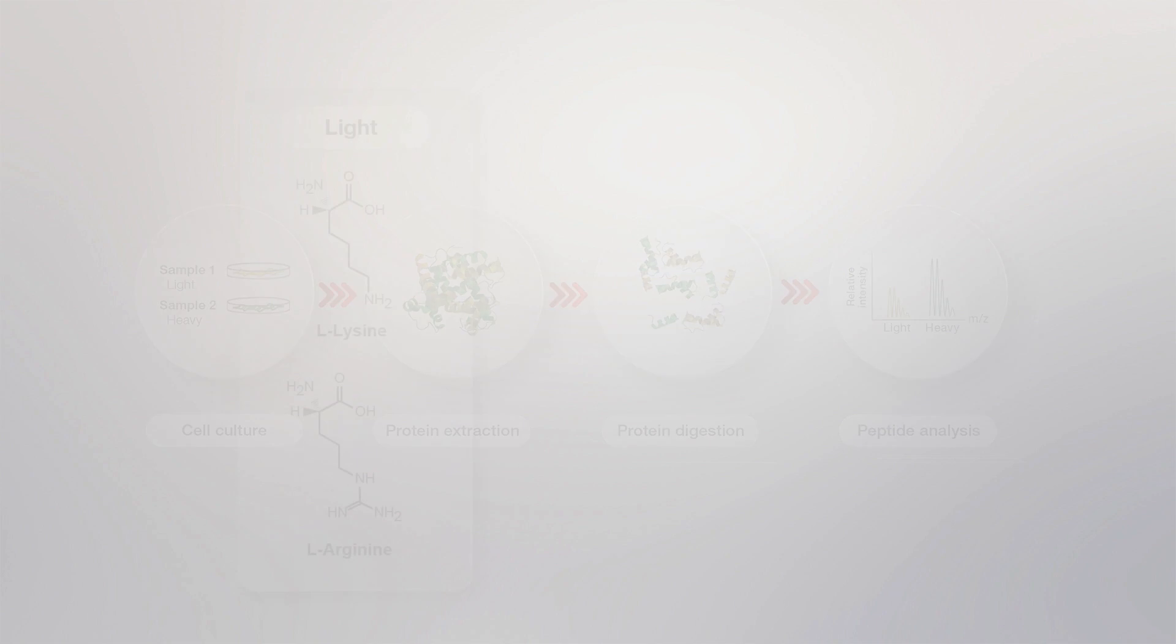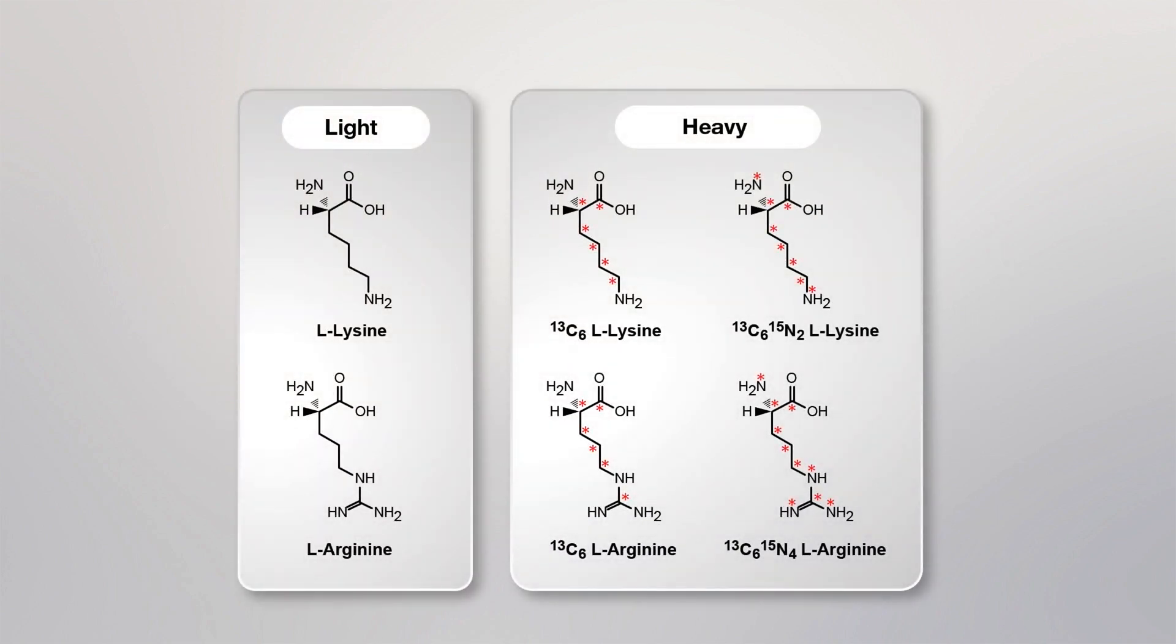SILAC amino acids are chemically identical to natural amino acids, but differ in mass due to the incorporation of stable isotopes, denoted here by the red asterisks. These heavy amino acids, typically lysine or arginine, facilitate detection and quantitation of labeled proteins relative abundance in different samples.